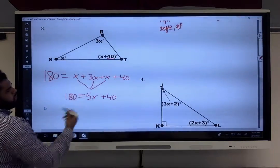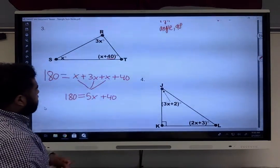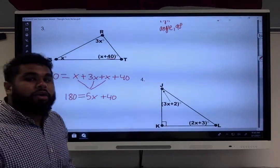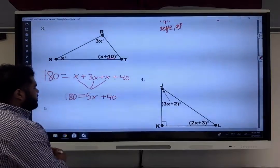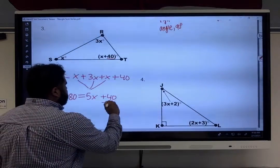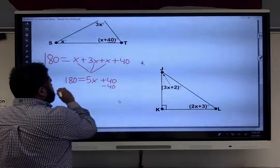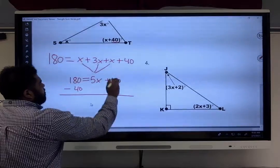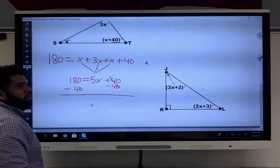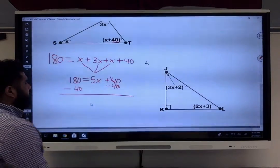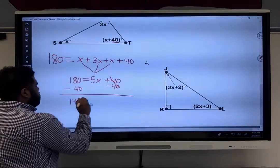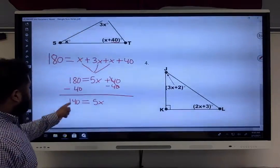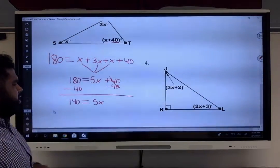So, let's go ahead and get rid of our constant first. Remember, our constant is this 40. So minus 40. We're going to subtract 40 from both sides. So now we're left with 0 over here because 40 minus 40 is going to give you 0. 180 minus 40 is leaving you with 140. So now I have 140 equals 5X.